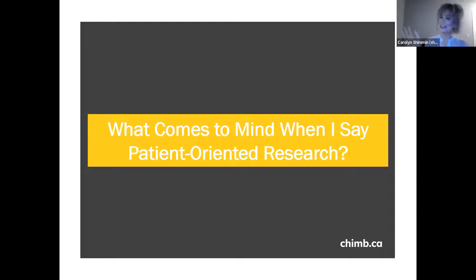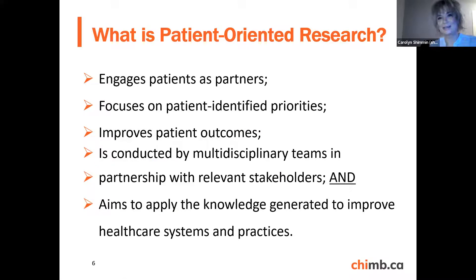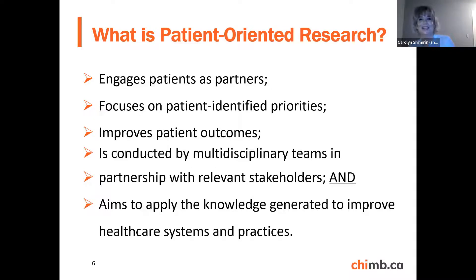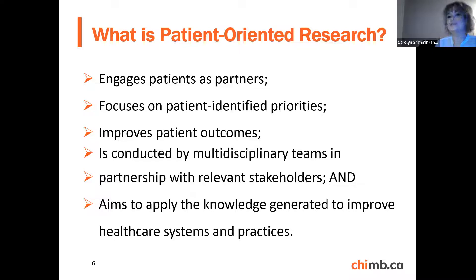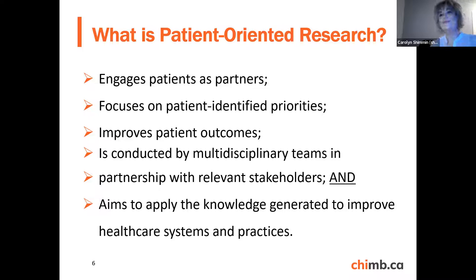These are all amazing answers — you're already up to speed on everything. This is the definition from the Canadian strategy for patient-oriented research, and you hit pretty much every component. They see it as a spectrum of research that engages patients as partners, focuses on patient-identified priorities, improves patient outcomes, is conducted by multidisciplinary teams in partnership with relevant stakeholders, and aims to apply the knowledge generated to improve healthcare systems and practices.